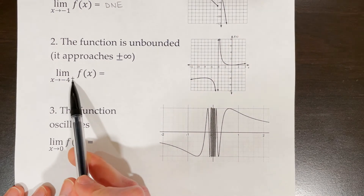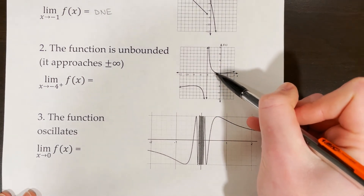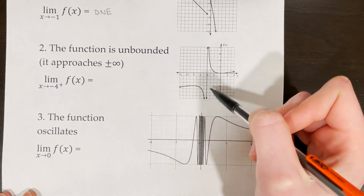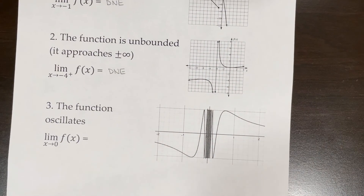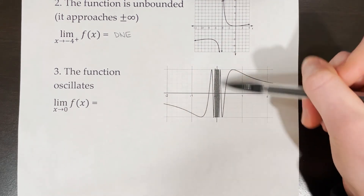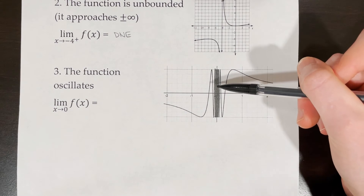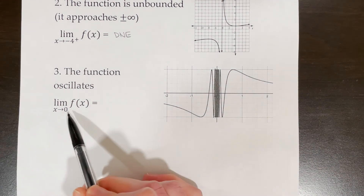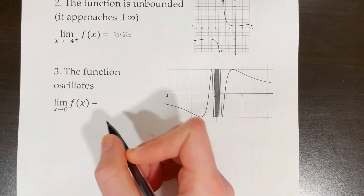Looking at the right-side limit of f of x as x approaches negative 4 on this graph: x is approaching negative 4 from the right and f of x just keeps going up — we can see an asymptote at negative 4. Because the function approaches positive infinity, the limit does not exist since infinity is not a definable number. The third situation where the limit does not exist is when the function is oscillating — going back and forth so densely that you can't determine the actual value. Even zooming in on a graphing calculator won't help; it stays dense, so the limit as x approaches 0 does not exist.